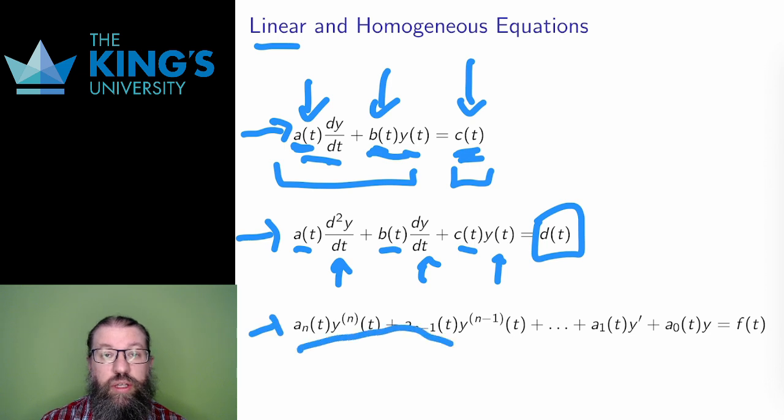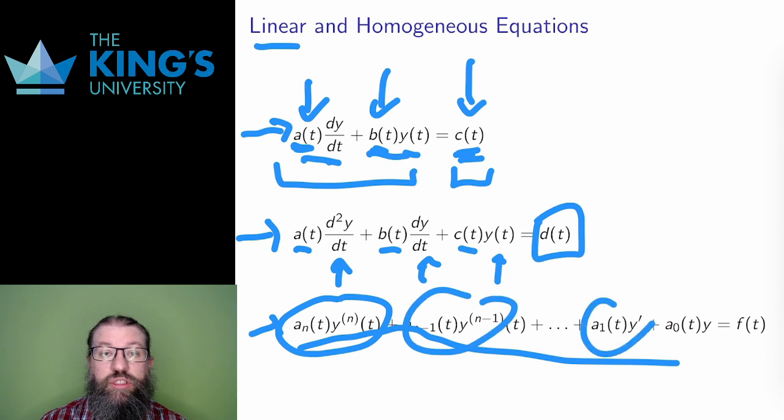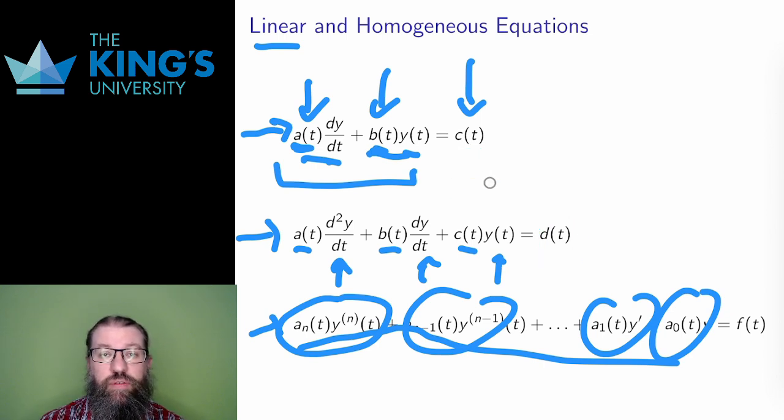We're not going to deal with high-order linear equations in this course, but the pattern here is this. It looks very much like a polynomial, but with orders of derivatives instead of powers of a variable. Lastly, the linear equation is homogeneous if the function on the right is zero. So c of t in the first, d of t in the second. If that happens to be zero, we call this a homogeneous linear differential equation.